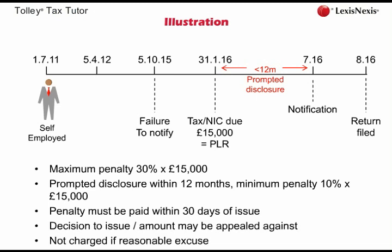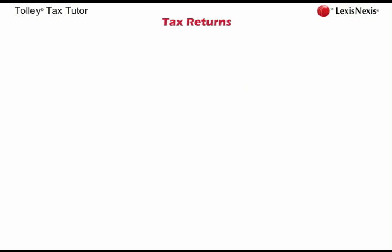The notification of chargeability provisions only apply to taxpayers who have not already received a tax return from the revenue. If a taxpayer receives a tax return, it is a safe assumption that HMRC already know that person exists. Therefore, any income received or gains made in the tax year can simply be disclosed on the tax return in the normal way. Tax returns are typically issued by HMRC to taxpayers on the 6th of April immediately following the tax year.